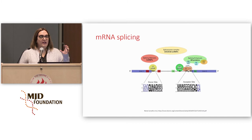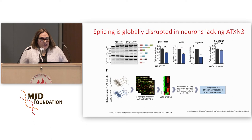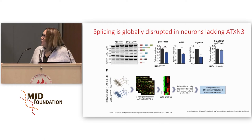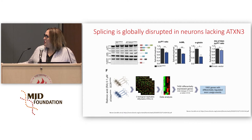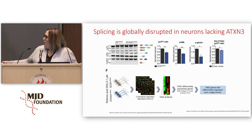We know that splicing is regulated by constitutive factors that are always present for splicing to occur, and by regulators that may influence this diversity. The first thing we checked was whether splicing is going well in cells that don't have Ataxin-3. Using reporters — vectors in which we can assess if splicing is occurring correctly — we always see decreased efficacy of splicing when we silence Ataxin-3. We also performed a specialized microarray analysis looking across the genome for splicing changes, and we saw almost 2,000 genes with different regulation of splicing.